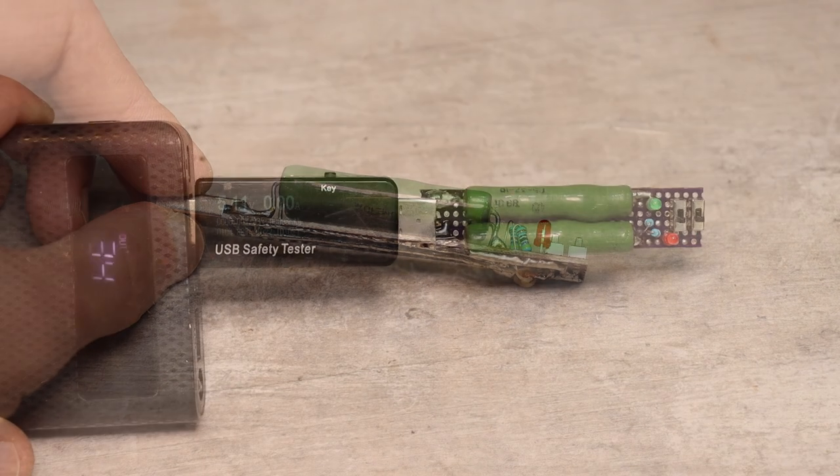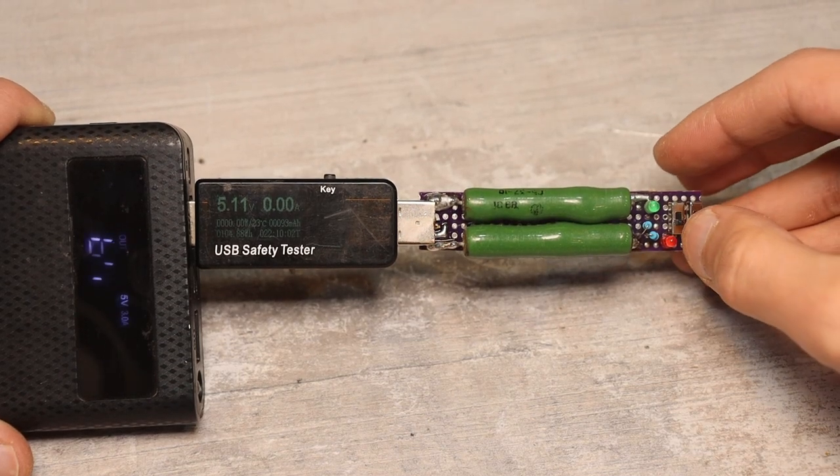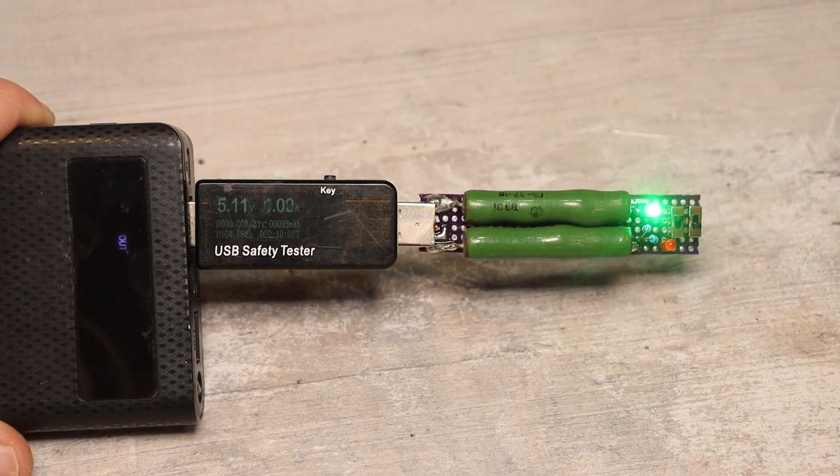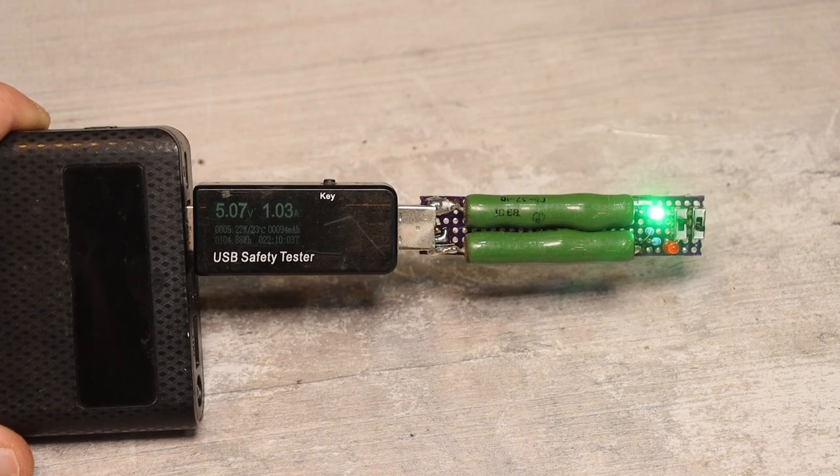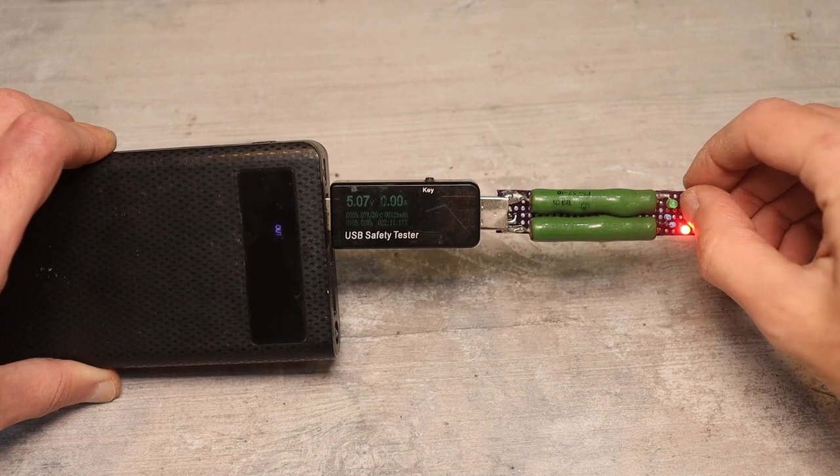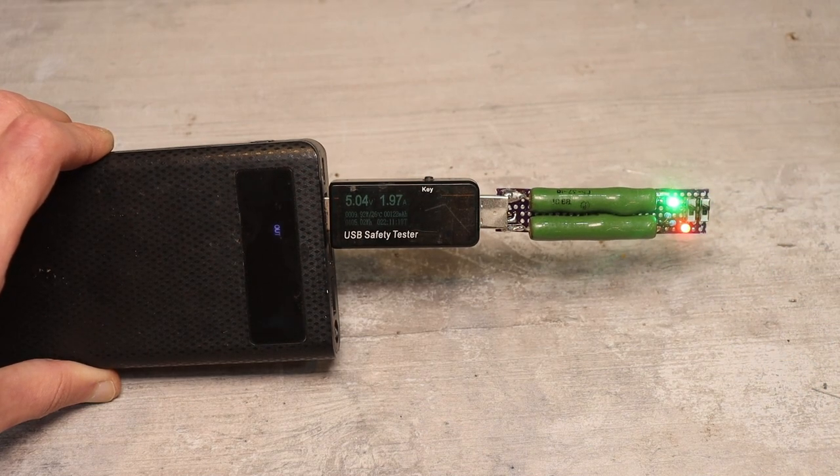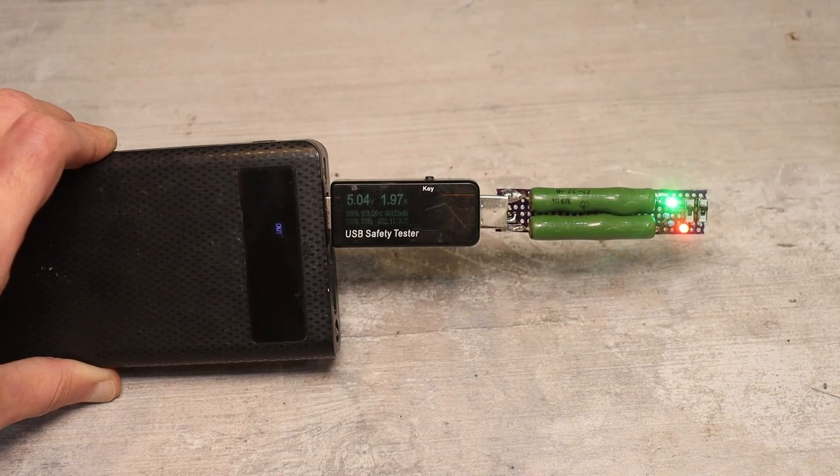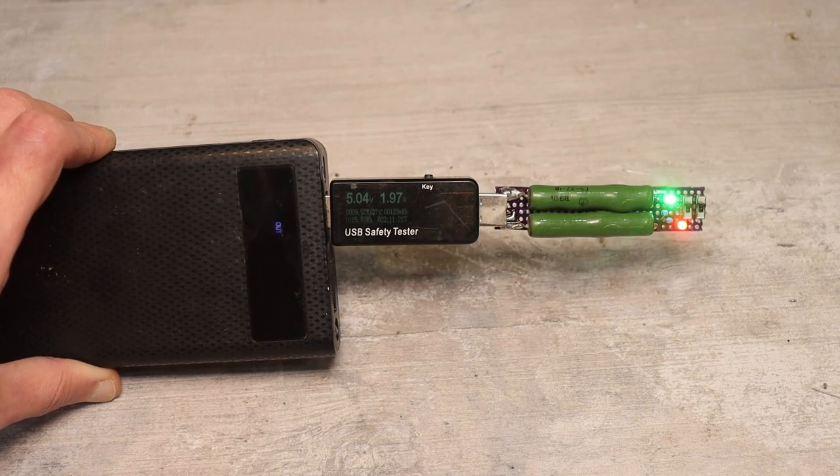It works as follows. Insert the load into the USB port by turning on the first toggle switch. The port is loaded with a current of 1 ampere, the corresponding LED lights up. Turning on the next switch connects the second resistance in parallel, loading the same port with a current of 2 amps, the second LED lights up.